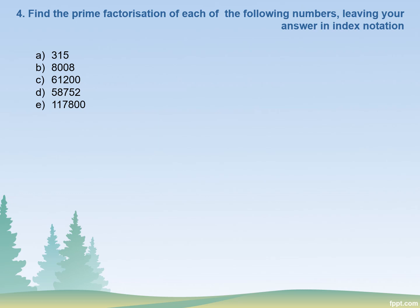Bismillahirrahmanirrahim. Assalamu alaikum, dear viewers. Welcome to video number four of this series. We are solving questions from Oxford's seventh edition New Syllabus Mathematics Workbook 1. This is the fourth question and the fourth video we are solving from the workbook. In this question, it asks: find the prime factorization of each of the following numbers, leaving your answer in index notation.